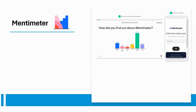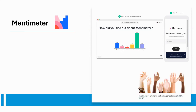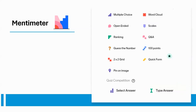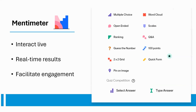Mentimeter is an online presentation tool. It's also an audience response system, and it's designed to work digitally — in person and remote. It can be used to create presentations, quizzes, word clouds, questions and answers, scales, and polls. Participants can interact live with it, and you can get real-time results. It's a great presentation tool to facilitate audience engagement and involve students in your class.